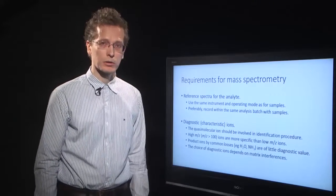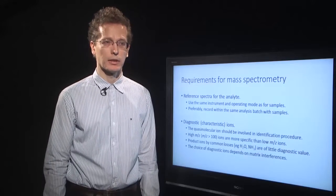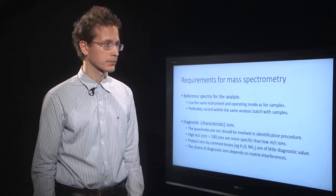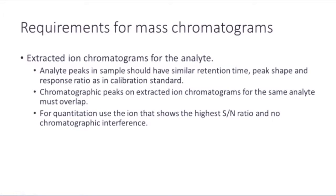The choice of diagnostic ions also depends on the matrix interferences. So if matrix interferences are present, a different diagnostic ion should be chosen. Analyte peaks from mass chromatograms in sample and in calibration standard should be similar with respect to retention time, peak shape, and also response ratio. Chromatographic peaks on extracted ion chromatograms for the same analyte must overlap. For identification, we use multiple ions, while for quantitative analysis just a single ion is used. This ion for quantitation is chosen based on high signal-to-noise ratio and lack of chromatographic interferences.